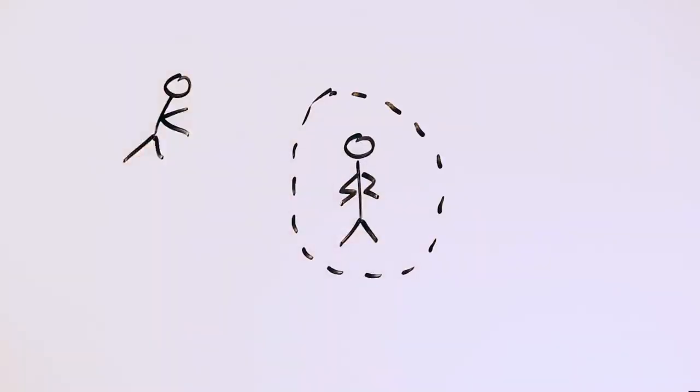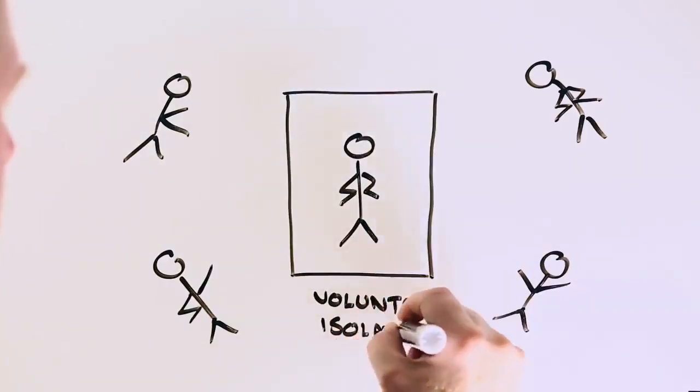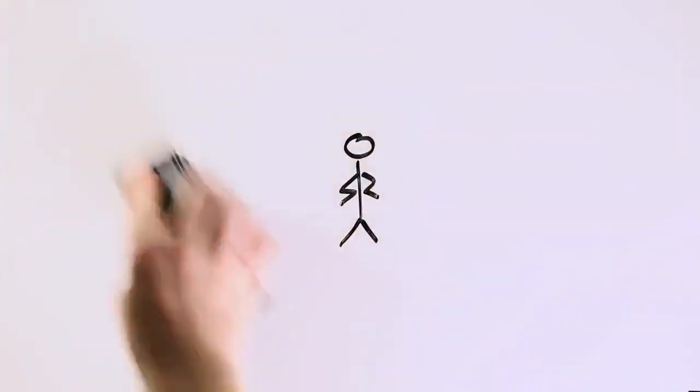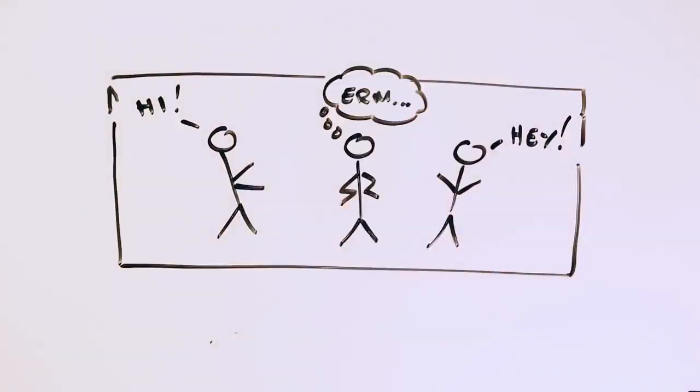As the virus spreads, more and more people are being advised to distance themselves physically from others and to isolate themselves if they've been around someone who carries it. Yet if you're a student living in a dorm with others or in a house or an apartment, this is easier said than done.